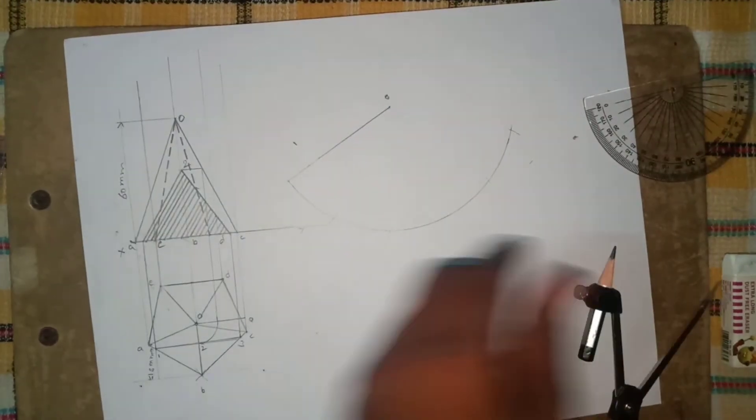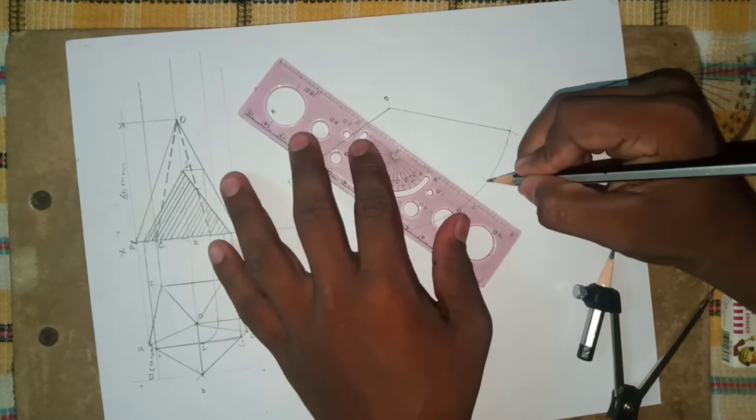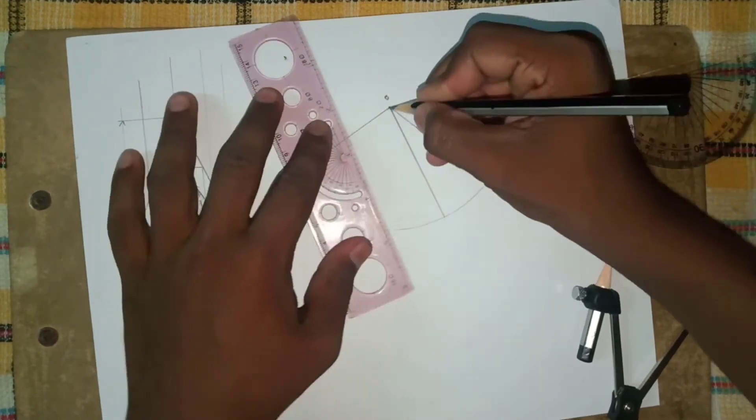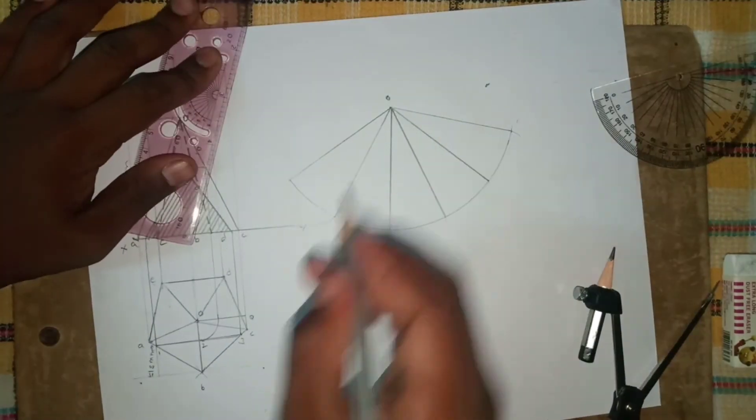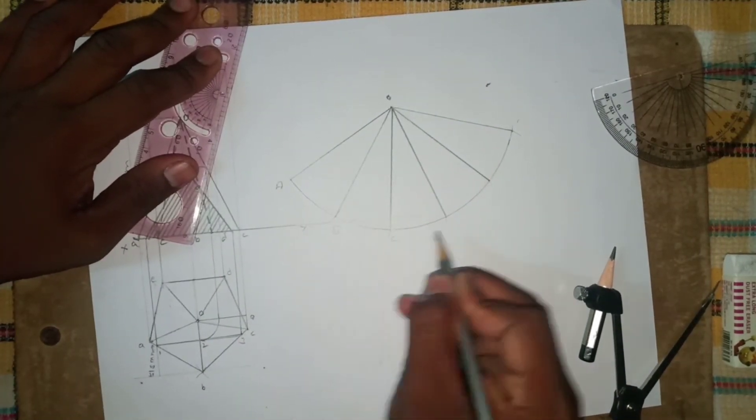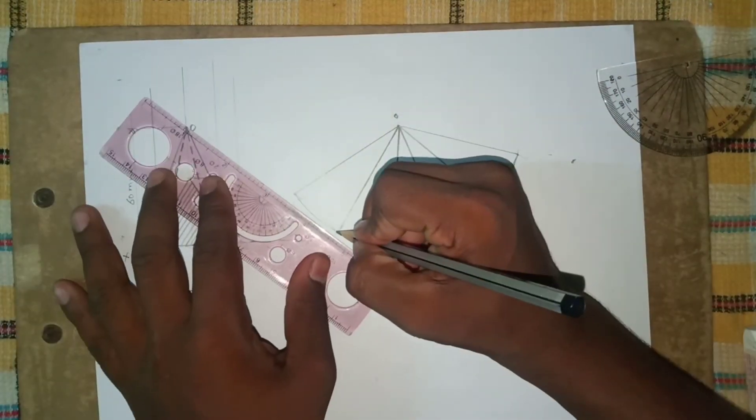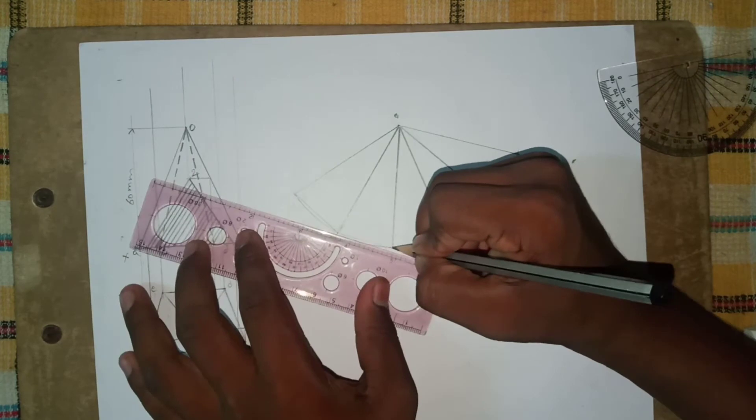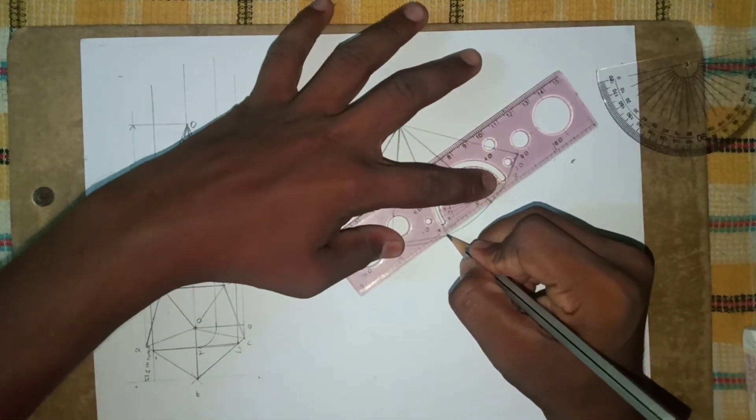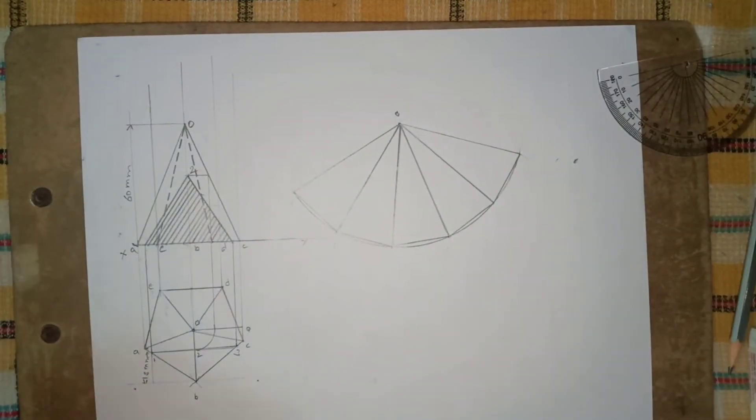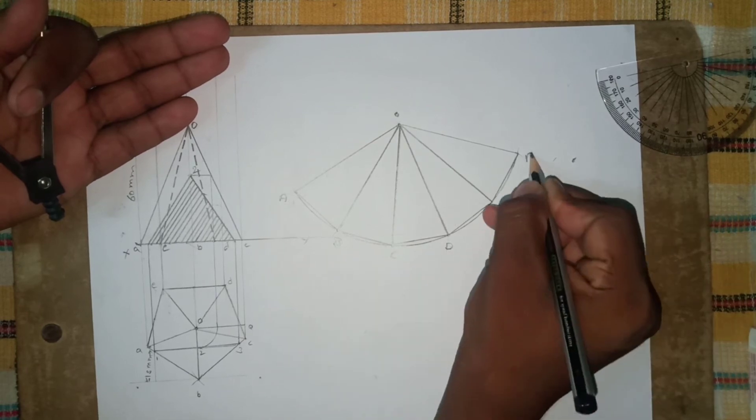Now let's join with O, now let's join with O, A, B, C, D, E. Let's back to A. Joining A, B, C, D, E, let's back to A.